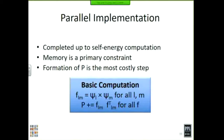As a refresher, the basic computation to form P: we have a bunch of state vectors we refer to as psi. We take all the psi_lm pairs for all L and M, where L are occupied states and M are unoccupied states. We do an element-wise multiplication to get F_lm. Then for all of these F's, we do the outer product and sum them together, and that gives us our P.